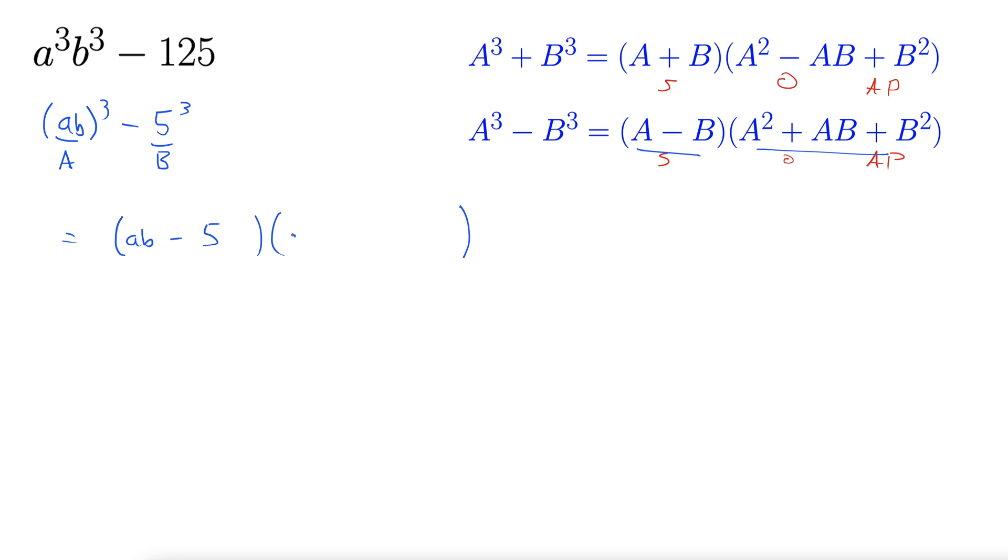A², so a²b², plus AB, so plus 5ab, plus B², 5² which is 25.